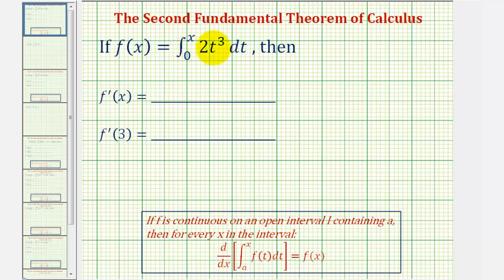Welcome to an example of the second fundamental theorem of calculus. The second fundamental theorem of calculus is stated here below, where if f is continuous on an open interval I containing the constant a, then for every x in the interval, the derivative with respect to x of the integral of f of t from a to x is equal to f of x.